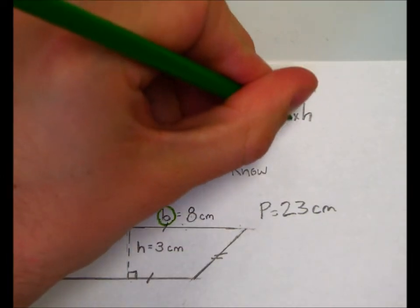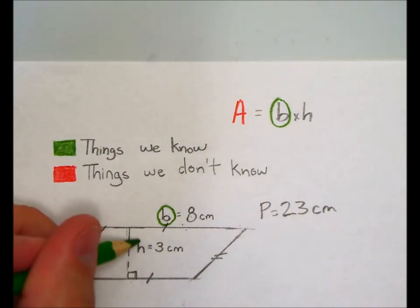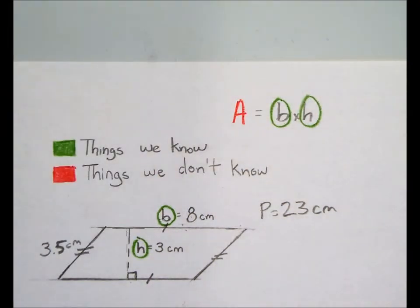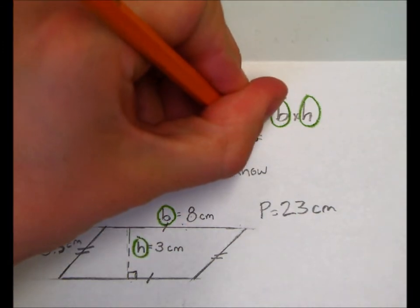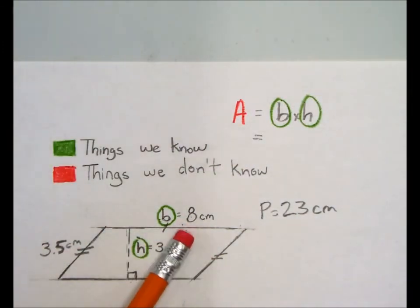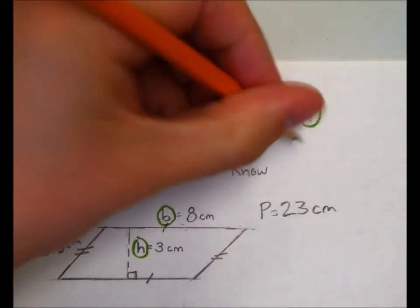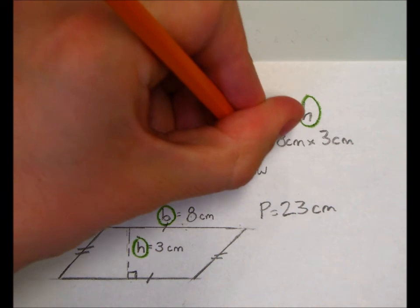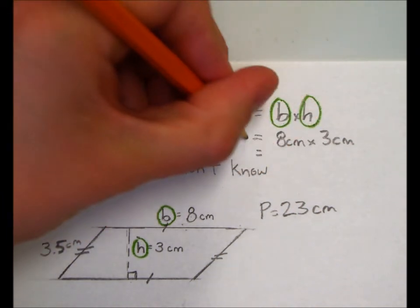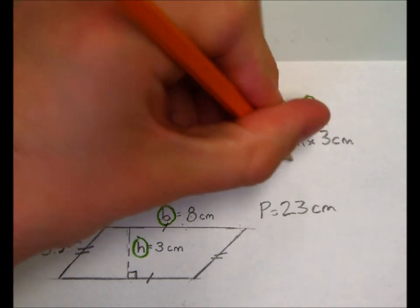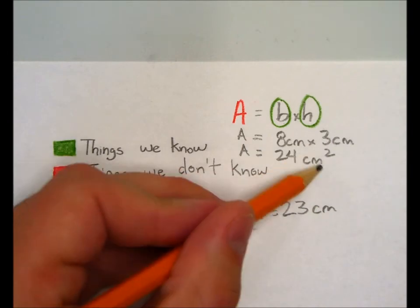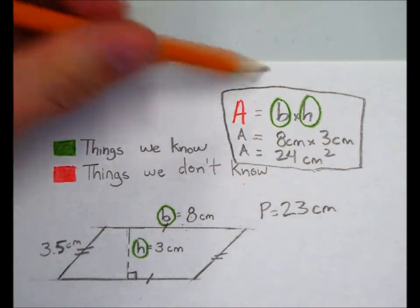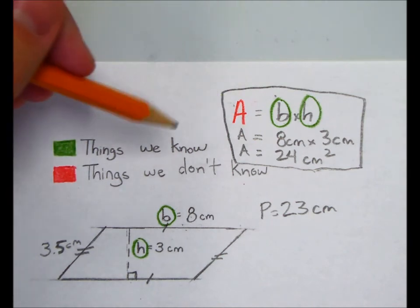So, I'm going to circle this B here. We also know our height. Our height is right here and it's also given for us as 3 centimeters. What I'm going to do to solve this question is I'm going to rewrite the equation with the relevant information. So, instead of B times H, I'm going to write 8 centimeters by 3 centimeters. So, 8 centimeters times 3 centimeters. And that will give us our area which is now 24 centimeters squared. And so, this right here is exactly how you should be showing your work. You should be looking for things you know, things you don't know in order to figure out your equation.